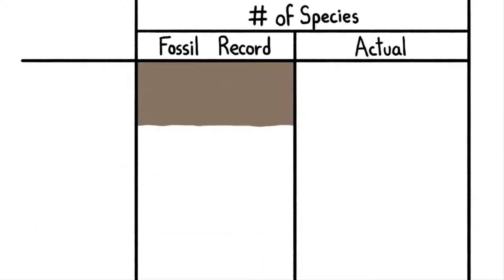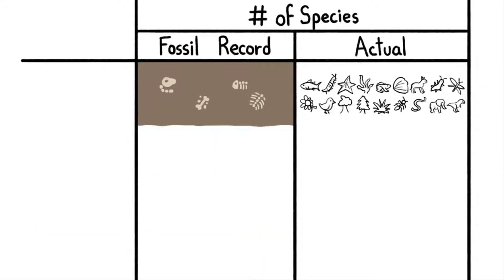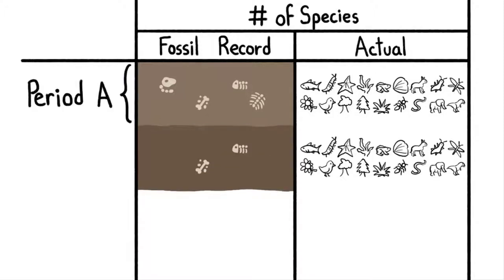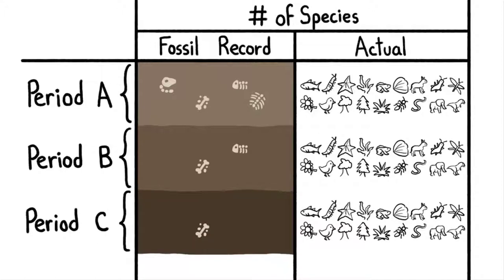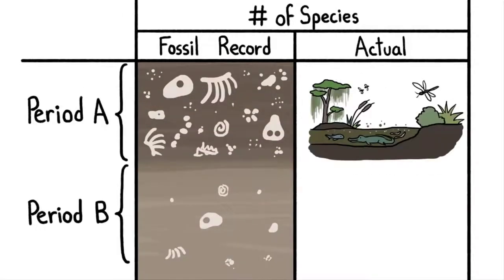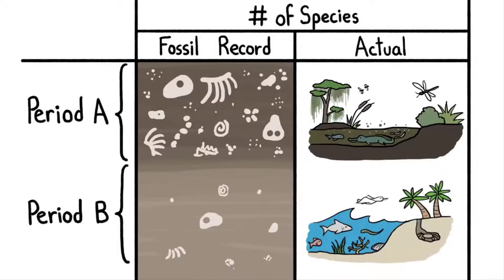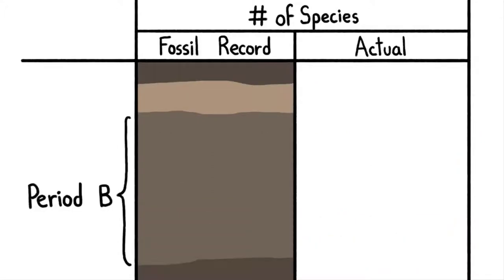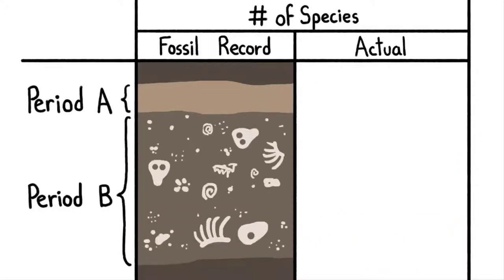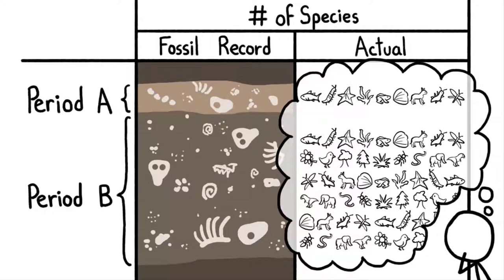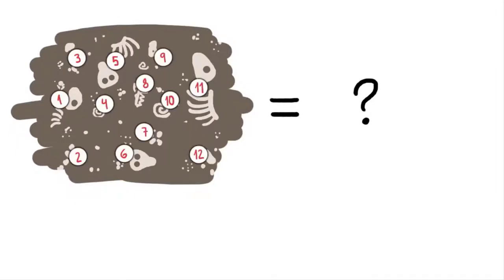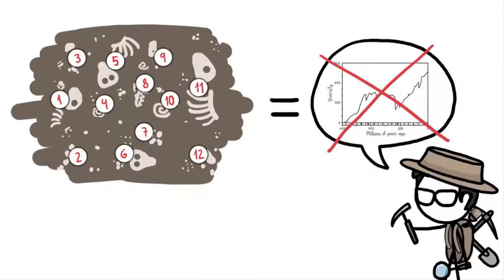The fossil record only captures a tiny fraction of the life that has ever existed on our planet, and it captures a different fraction from one period to the next. In general, the record gets less complete the further back in time you go, complicated by several factors. We have more fossils from swampy places because calm, muddy conditions were perfect for preservation — not necessarily because those periods were more diverse. We also have more rock from some periods than others, and in general the more rock we have, the more fossils we find, making life appear more abundant. In other words, the fossil record is inconsistent, so we can't just tally species and take results at face value as Sepkoski's Big Five chart did.